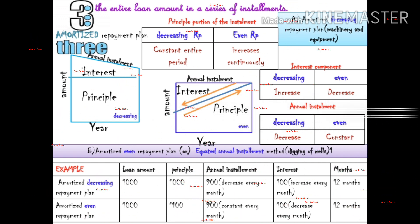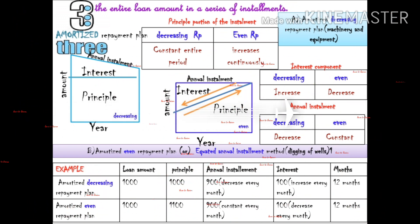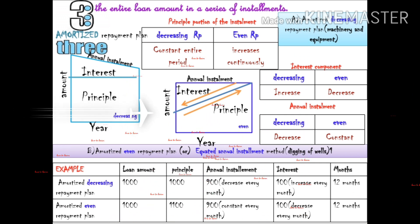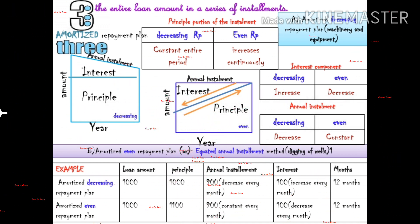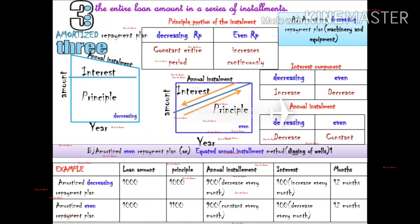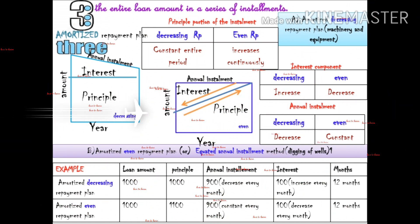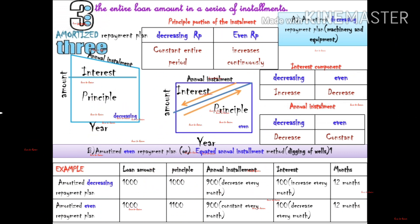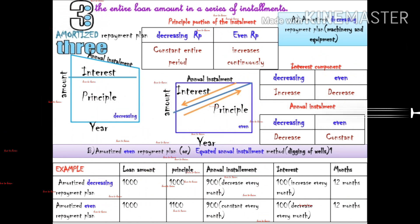Let's look at an example using a table. In the first month we pay a certain amount. In the second month we pay 200 Rs, and in the third month we pay 300 Rs. For example, the annual installments have more interest rate each month. That is the amortized decreasing repayment plan.